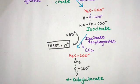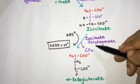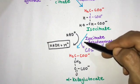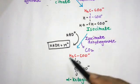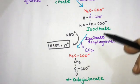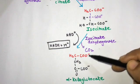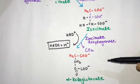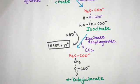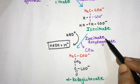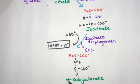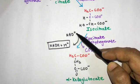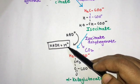The third step of the TCA cycle is oxidative decarboxylation. Isocitrate is converted to alpha-ketoglutarate, and CO2 is released. This reaction is catalyzed by isocitrate dehydrogenase, and in this process NAD+ is converted to NADH and H+.